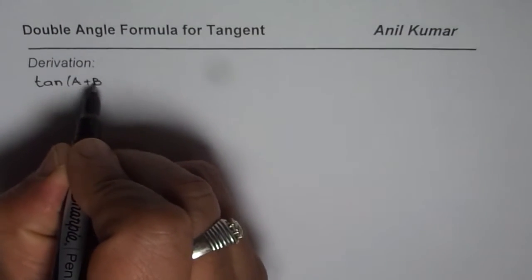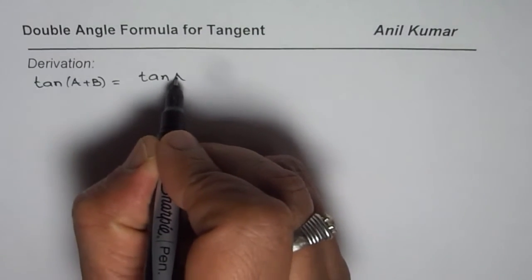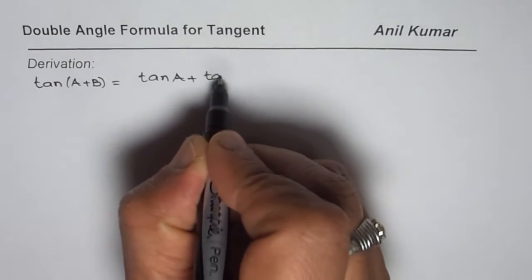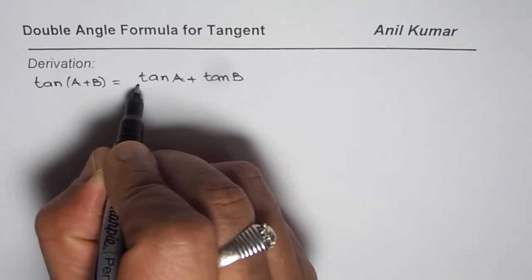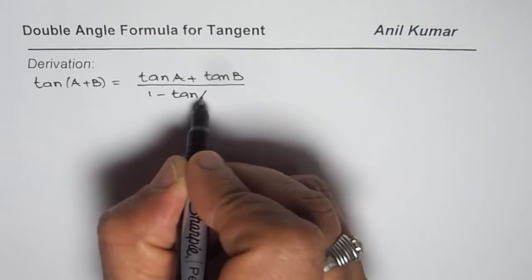Now we know tan(A+B) is tan(A) + tan(B) divided by 1 - tan(A)tan(B).